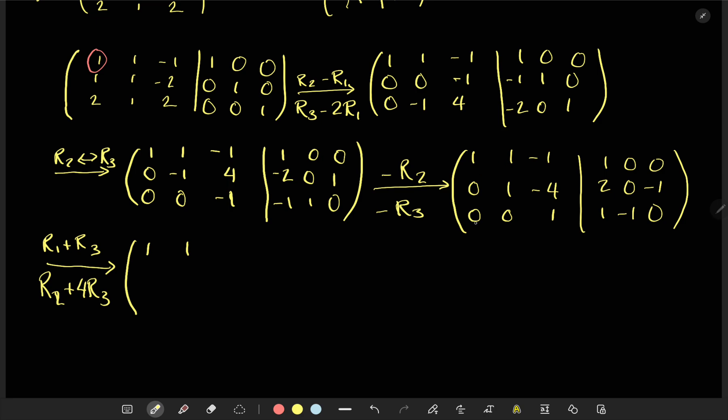Again, you're doing 1 plus 0, 1, plus 0, nothing happens, negative 1 plus 1, 0. And then, 1 plus 1, 2, 0 plus negative 1, negative 1, and then, 0 plus 0, 0. And here, I'm going to do this plus 4 times this one, so 0, 1, negative 4 plus 4 times 1 is 0, as expected. And then, 2 plus 4 times 1 is 6. And then, 0 plus 4 times negative 1 is negative 4. And then, negative 1 plus 0 is negative 1. Then, copy the last row.